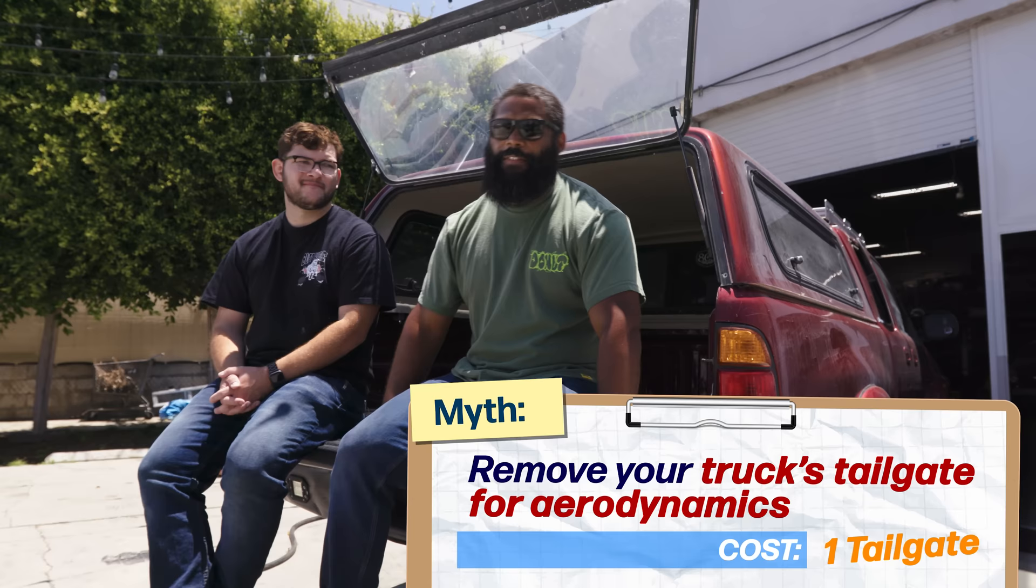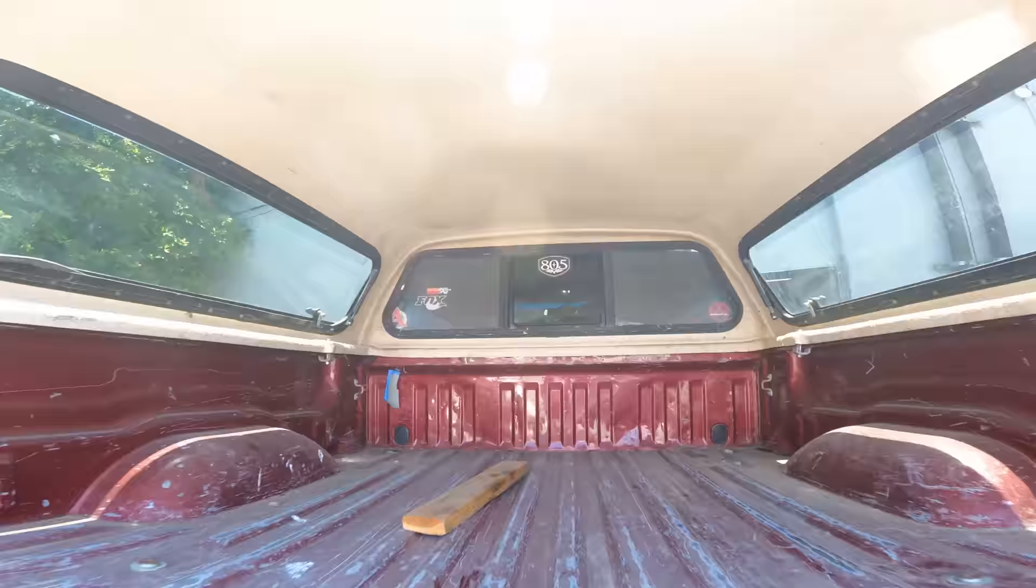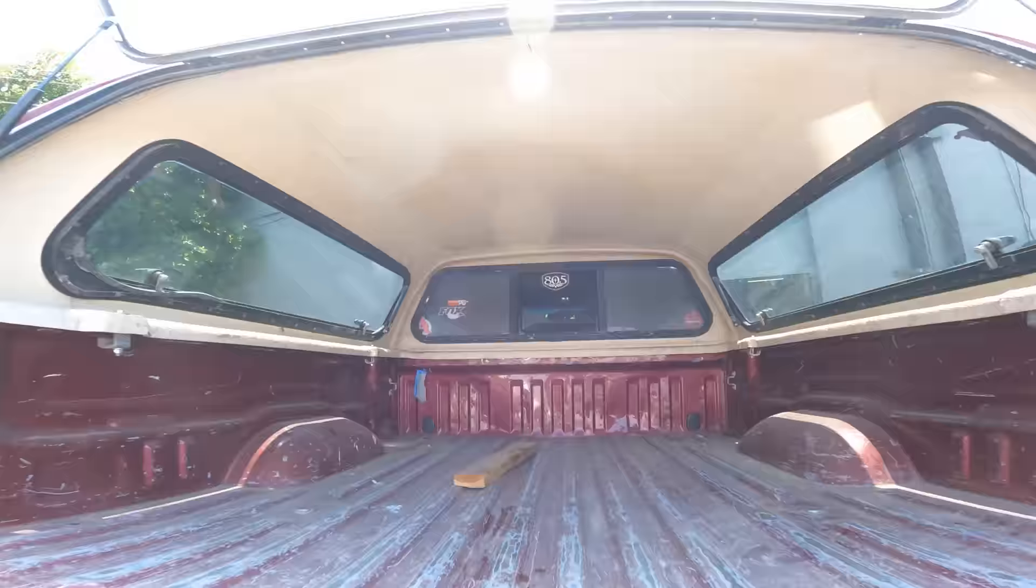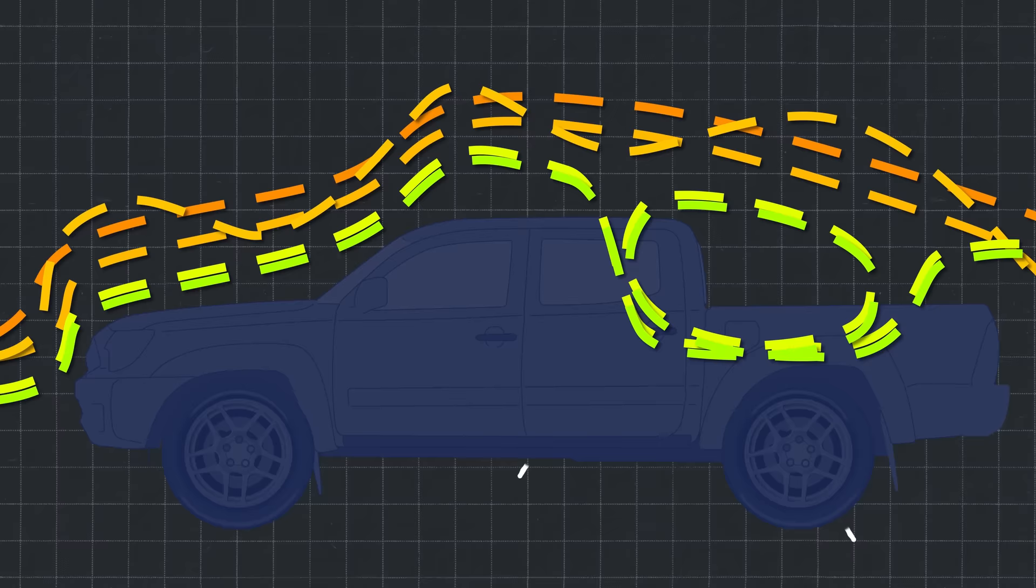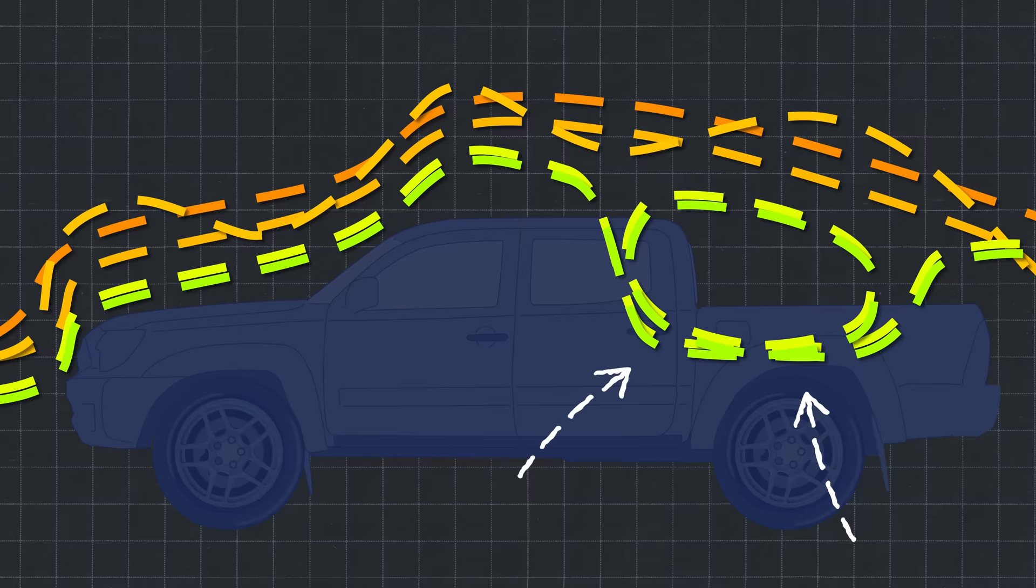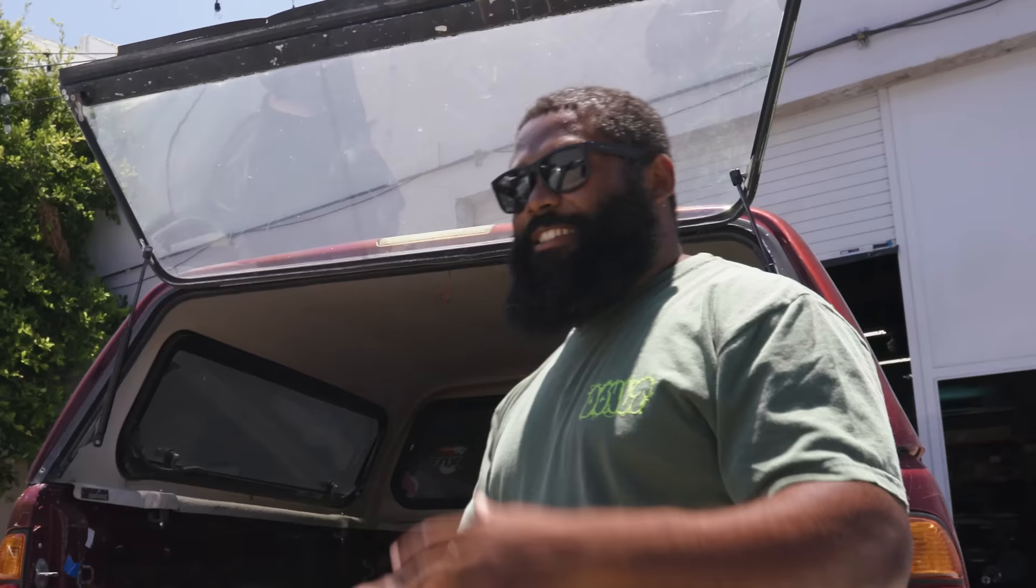Myth number one, remove your tailgate. I've heard this for years. People stand by it, and that's removing the tailgate from your truck to get more MPGs. I guess the thinking is with that tailgate in the up position, it's catching all that air in the bed, and opening it will just let it flow free. So it actually does the exact opposite. If you leave the tailgate up, it creates a vortex to allow the air to slip right over the whole bed of the truck. This is science, this is not a scam. It's already been proven. Keep your tailgates up.